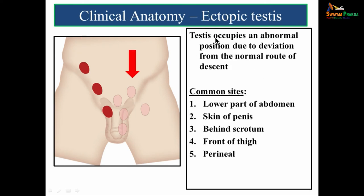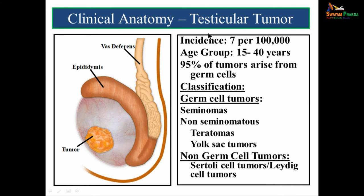Ectopic testis is where the testis occupies an abnormal position due to deviation from the normal route of descent. Common sites include: lower part of abdomen, over the skin of the penis, behind the scrotum, front of thigh, or in the perineal region. Testicular tumors have an incidence of about 7 per 100,000 and commonly affect the age group between 15 to 40 years. 95 percent of tumors arise from germ cells. They are classified into germ cell tumors — seminomas and non-seminomatous tumors (teratomas and yolk sac tumors) — and non-germ cell tumors such as Sertoli cell or Leydig cell tumors.